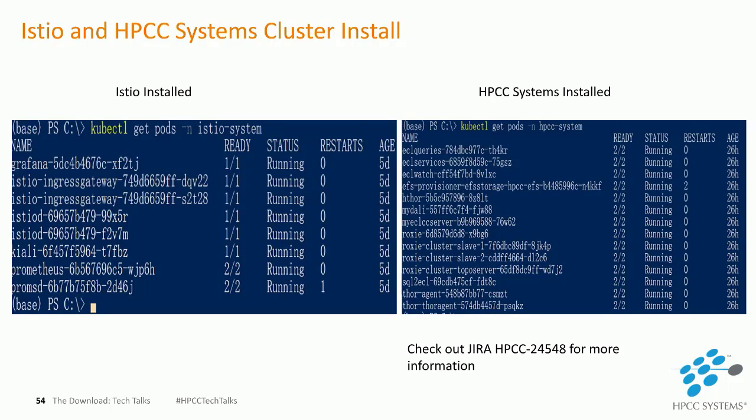However, there are some unintended consequences. Since Istio Sidecar is always on, when the main process finishes, the job will always be running. We have opened a Jira ticket in hopes of creating a workaround. This problem is an issue that is fundamentally incorrect with Kubernetes, and there are talks to fix this bug in Kubernetes 1.19, but even that is quite uncertain.